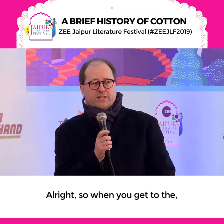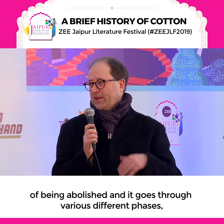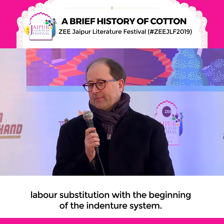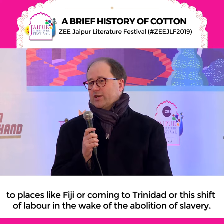In the early or middle part of the 19th century, slavery across the British Empire is in the process of being abolished. It goes through various different phases. You then get labor substitution with the beginning of the indenture system, people coming from India and other parts of the world to places like Fiji or coming to Trinidad — the shift of labor in the wake of the abolition of slavery.